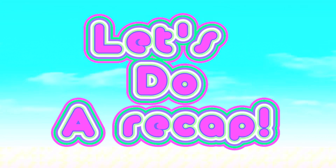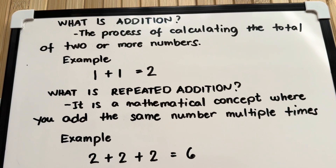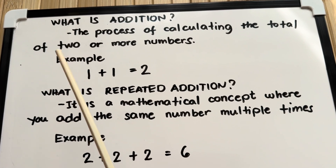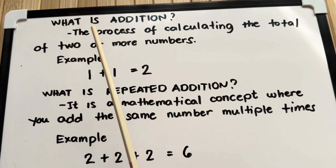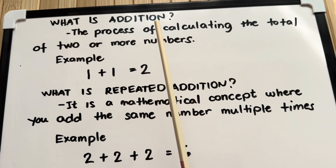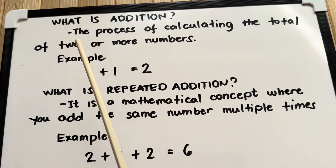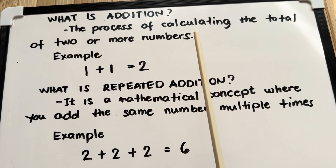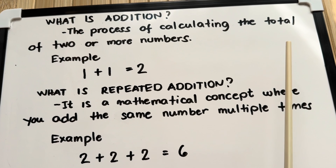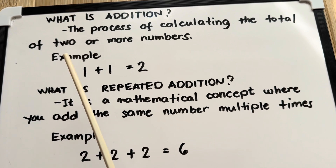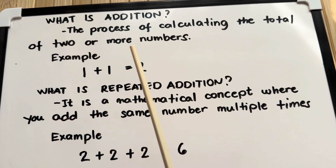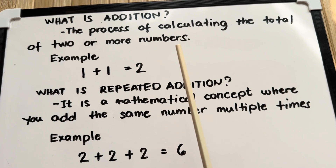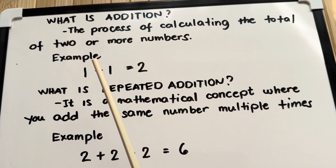Now, let's do a recap. Let's define first what is addition. Addition is the process of calculating the total of 2 or more numbers. Example, 1 plus 1 is equals to 2.